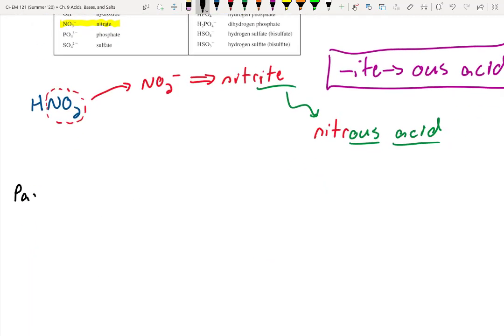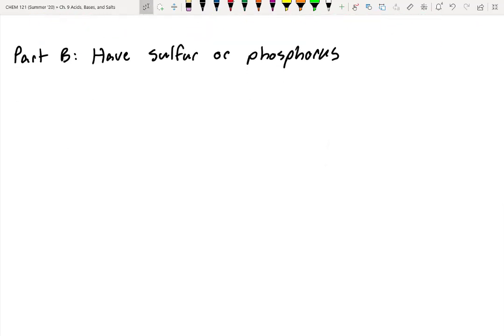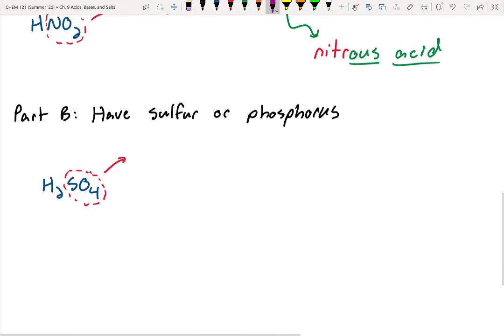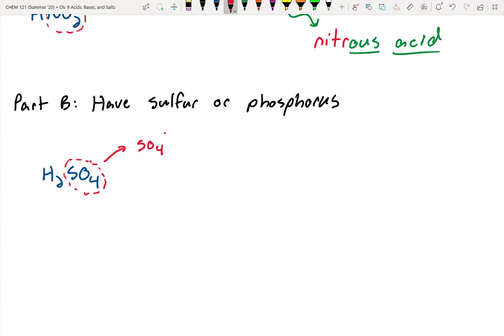So now let's go to part B. And part B is going to be a situation where we have sulfur or phosphorus. So let's take some situations here. And in the first one, I'm going to do H2SO4. So same idea. I'm going to take this polyatomic ion. And if we go ahead and we look at our chart, we could go up here. We could find it. It looks to me like it's going to be down here. Sulfate, SO4 2 minus. So I'll go ahead and write that down. SO4 2 minus is the sulfate ion.